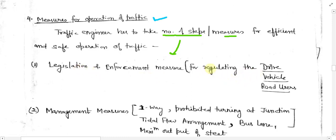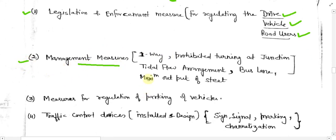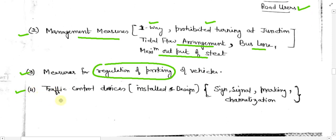The second step is management measures — one-way traffic, permitted turning at junctions, tidal flow arrangements, bus lanes, and maximum output of streets. These are management works done by the traffic engineer. The third step is measures for regulation of parking and vehicles — duration of parking, parking charges — all parking-related work comes under this third point.